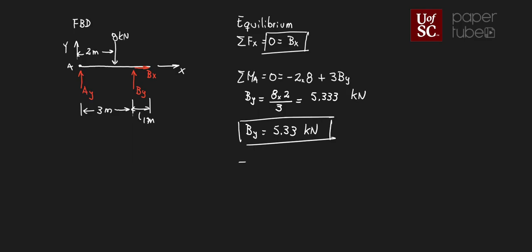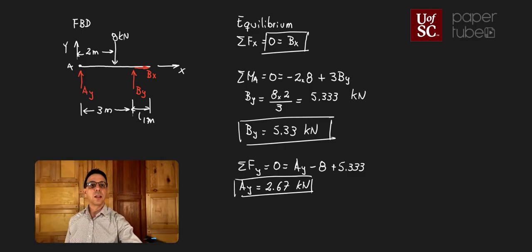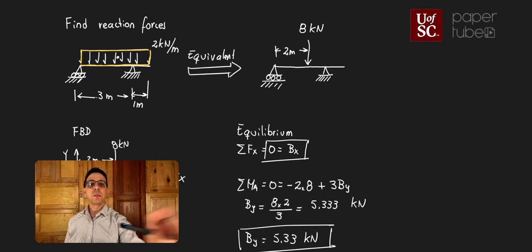Now doing the sum of forces in the Y direction equal to zero: AY is going up (positive), the 8 kilonewton force is going down (negative), and BY of 5.333 kilonewtons is going up (positive). Solving for AY, we find that AY is 2.67 kilonewtons. That is the way to solve a problem with distributed loads — the key is to add the step of finding the equivalent point load at the beginning of the analysis.